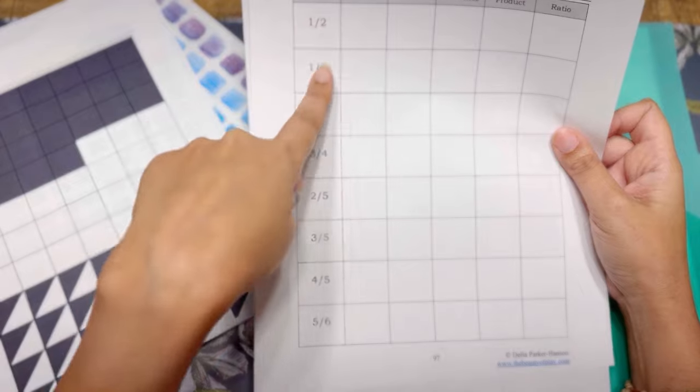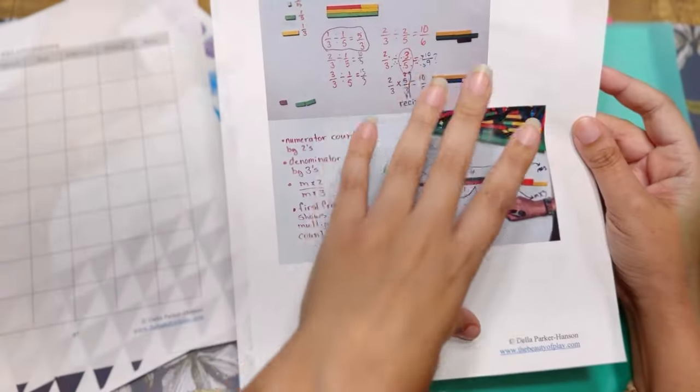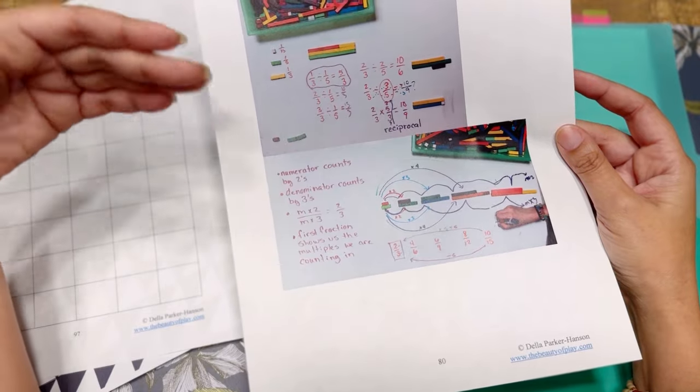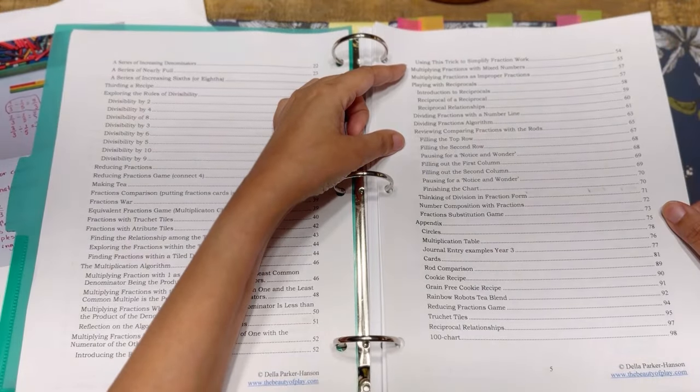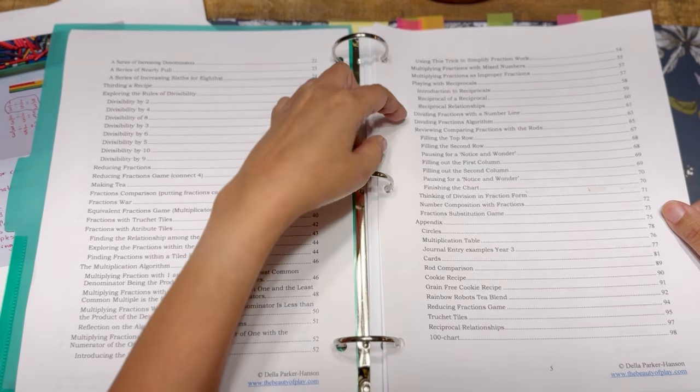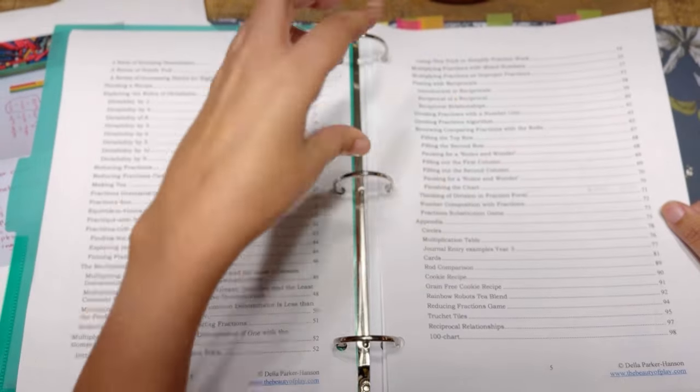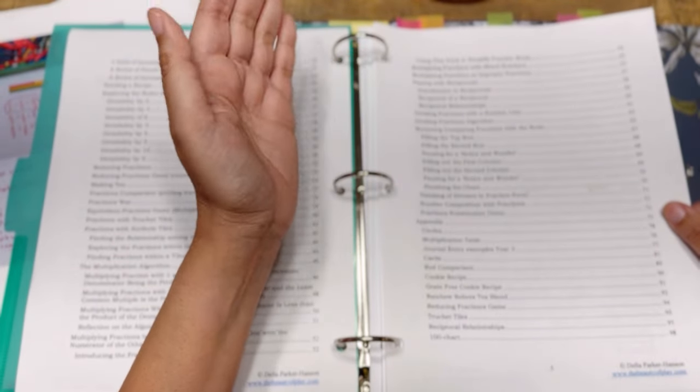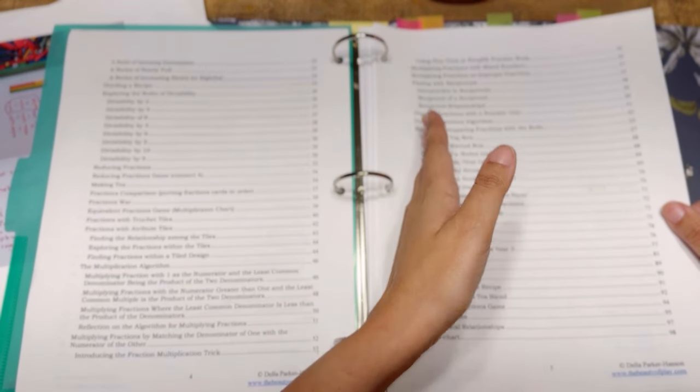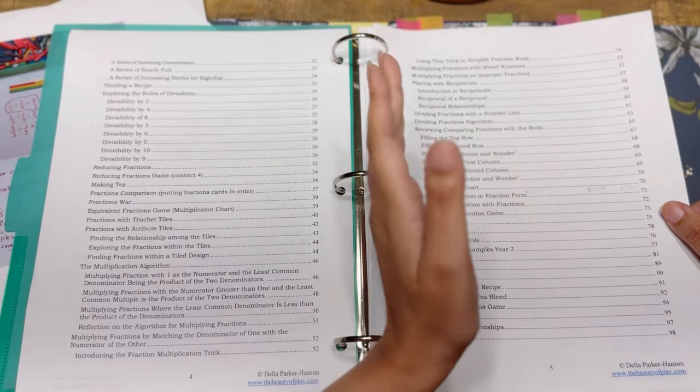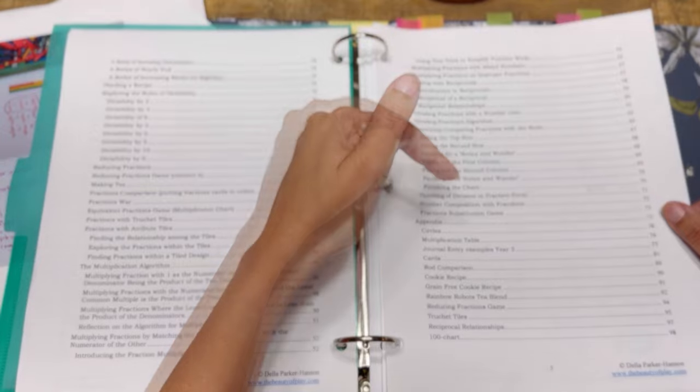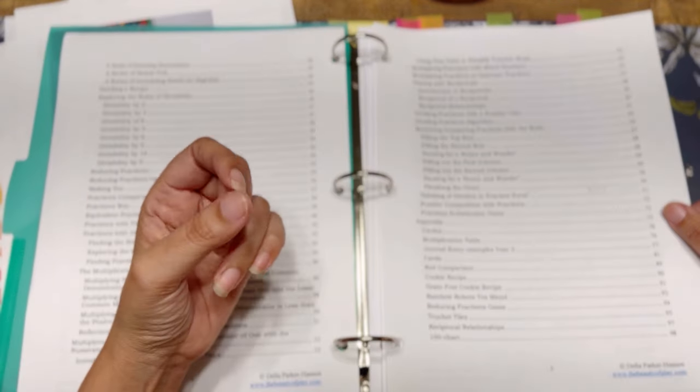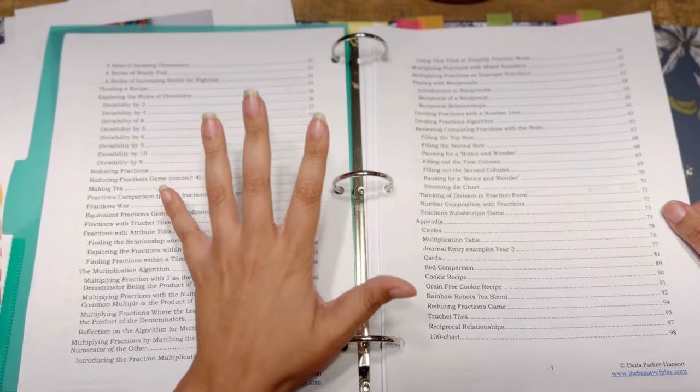For example, the reciprocal relationship. So you can start here with this chart and you can print this for as many kiddos as you have, also pictures throughout or some examples of drawings. So you can understand what she's saying for those visual learners, which I'm definitely one, with multiplying fractions with mixed numbers, multiplying fractions as improper fractions, playing with reciprocals, dividing fractions with number lines.